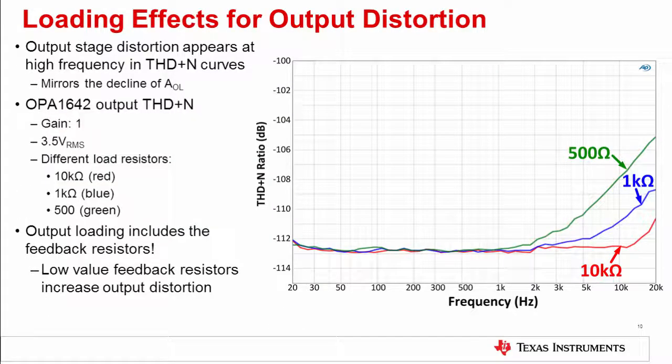This slide shows the OPA1642's measured THD plus N versus frequency results for three different loads. As you would expect, the THD plus N is degraded as the load increases. These types of curves will normally be given in a product datasheet and can be used as a guideline to understand the effects of loading on the distortion. Don't forget that the feedback resistor also constitutes a load.